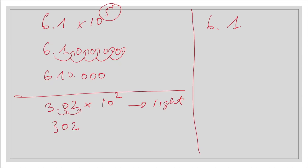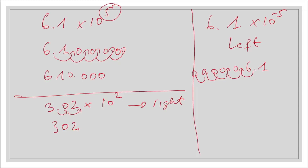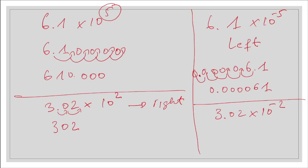In case we have a negative power, then we need to move the decimal to the left. For 6.1 times 10 to the power of minus 5, we move it 1, 2, 3, 4, 5 places to the left, giving us 0.000061 as a decimal number. You can also have 3.02 times 10 to the power of minus 2. Because this is negative, we move the decimal to the left 1, 2 places, and the number is 0.0302 as the standard number.